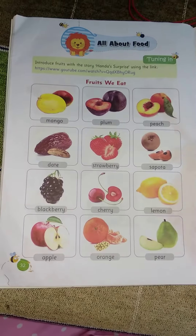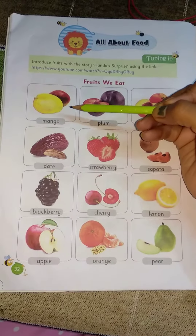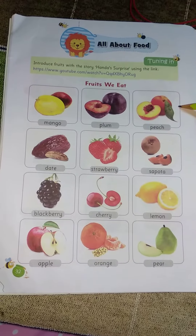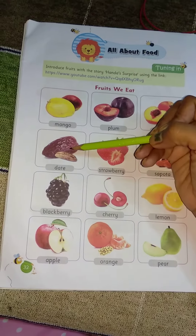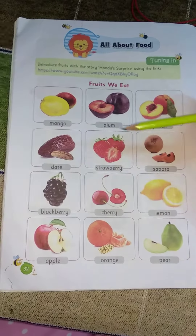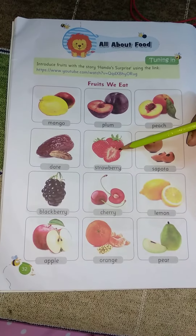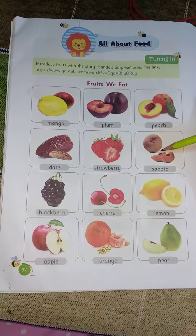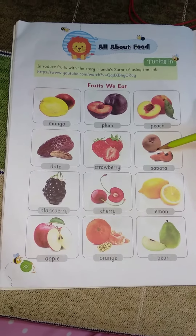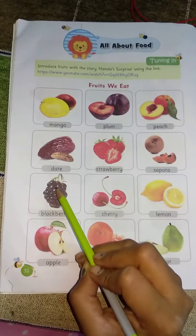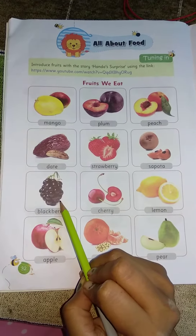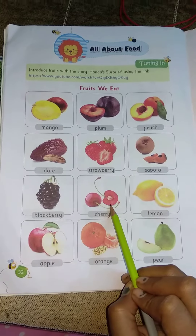See, mango, plum, peach, date — date means chohare — strawberry, sapota, chiku, blackberry, jamun, cherry.